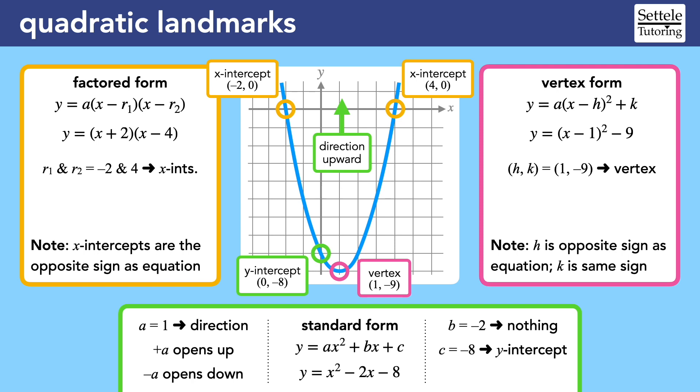The h and k represent the x and y coordinates of the vertex. Notice that the x coordinate is the opposite sign of the number in the parentheses. On the other hand, the y coordinate is the same sign as the number at the end. This is a confusing aspect of vertex form that the SAT will try to trick you with. The a at the beginning of the parentheses is the same a that we've seen in the other versions of the equation, so it tells us the direction of the parabola.